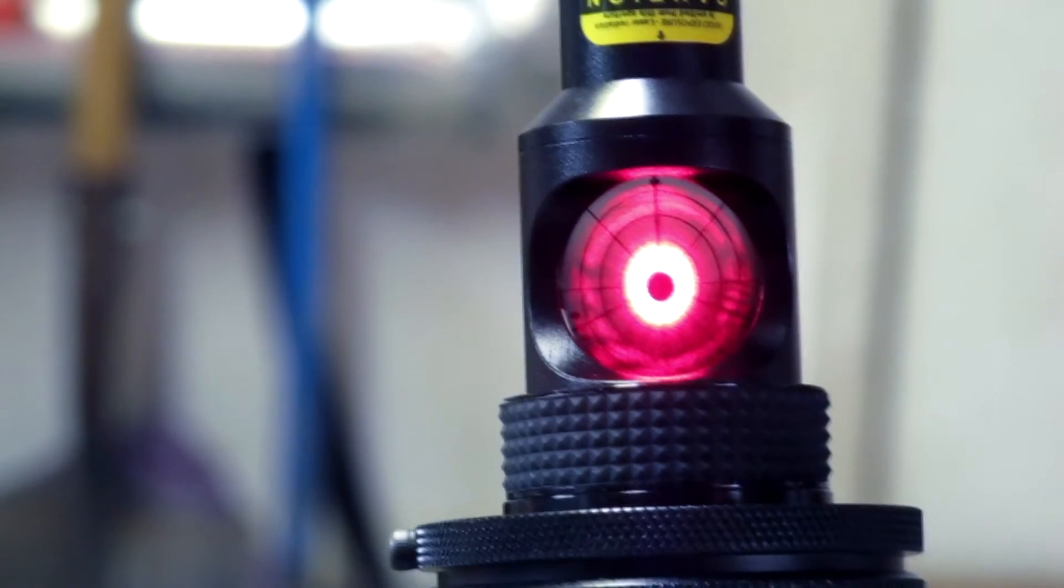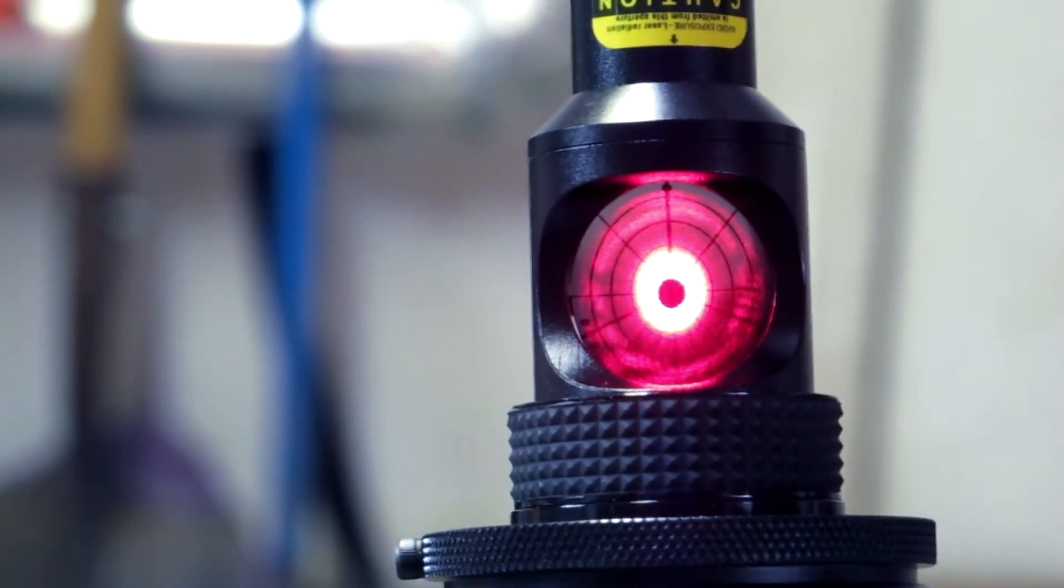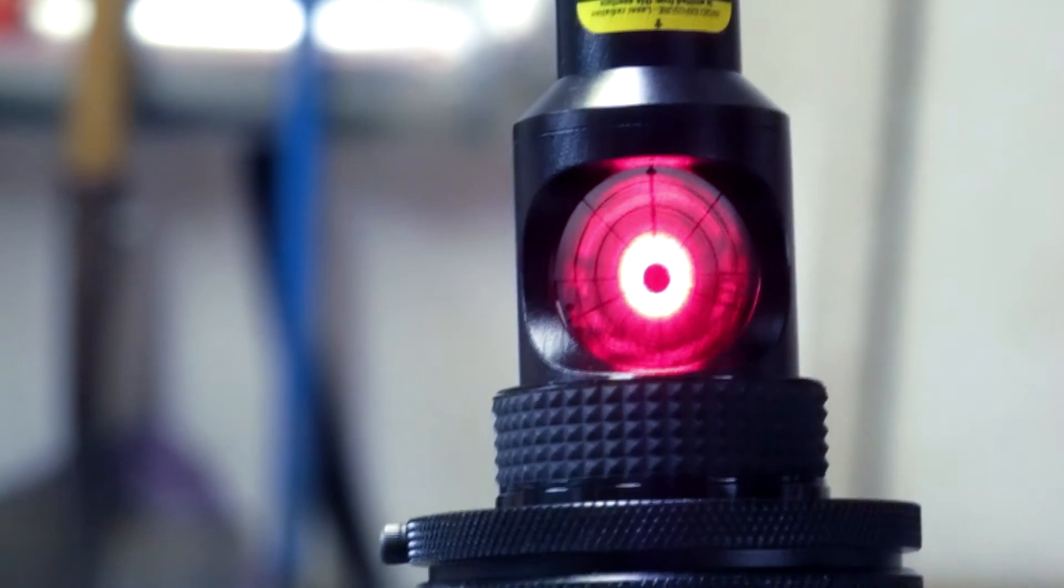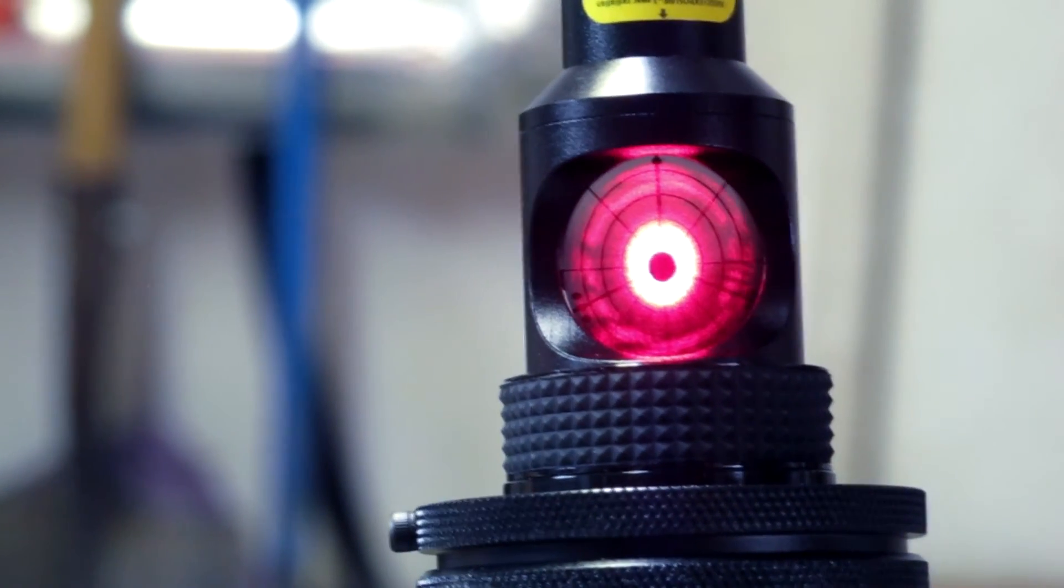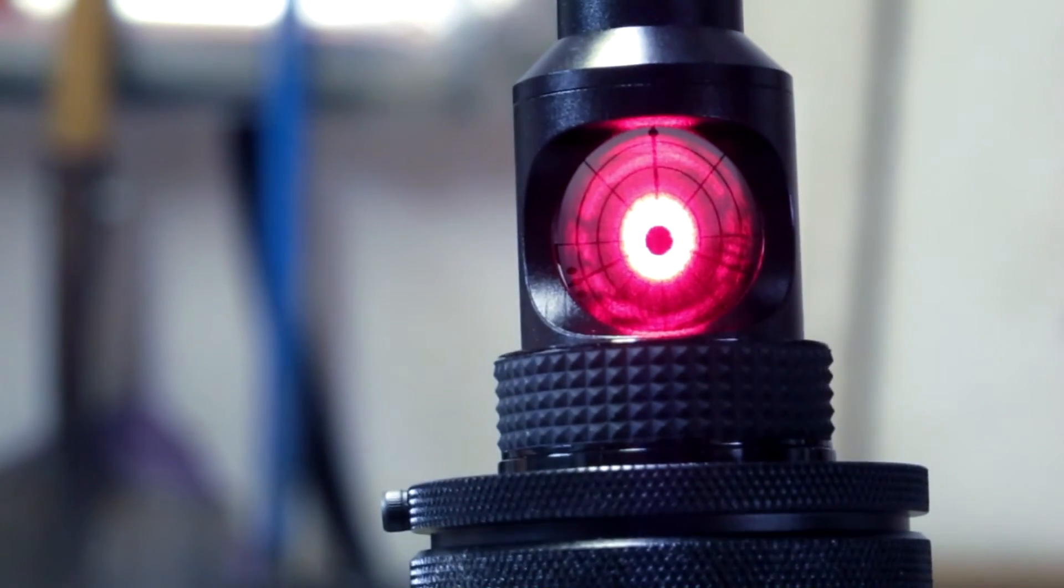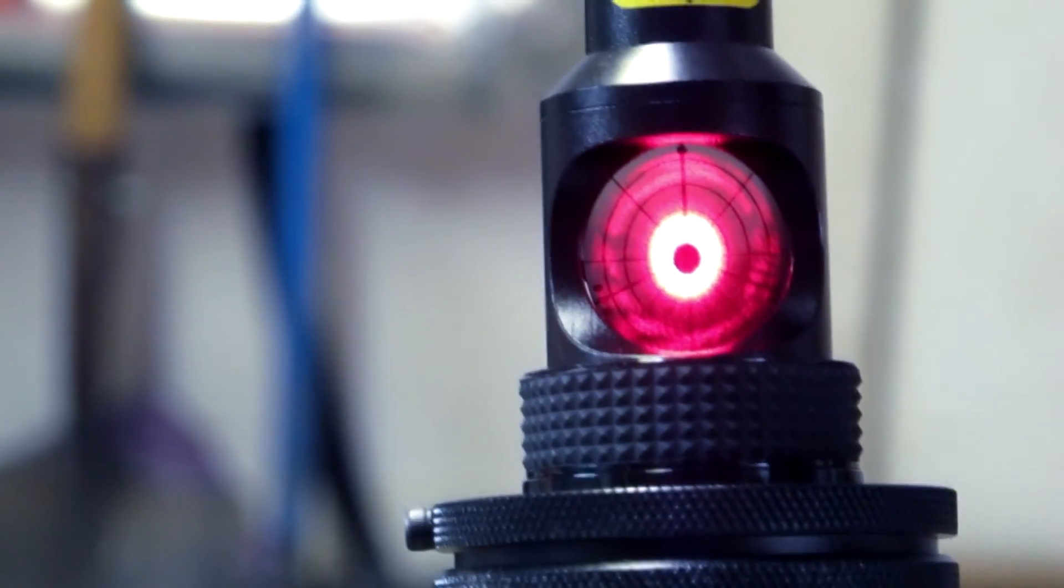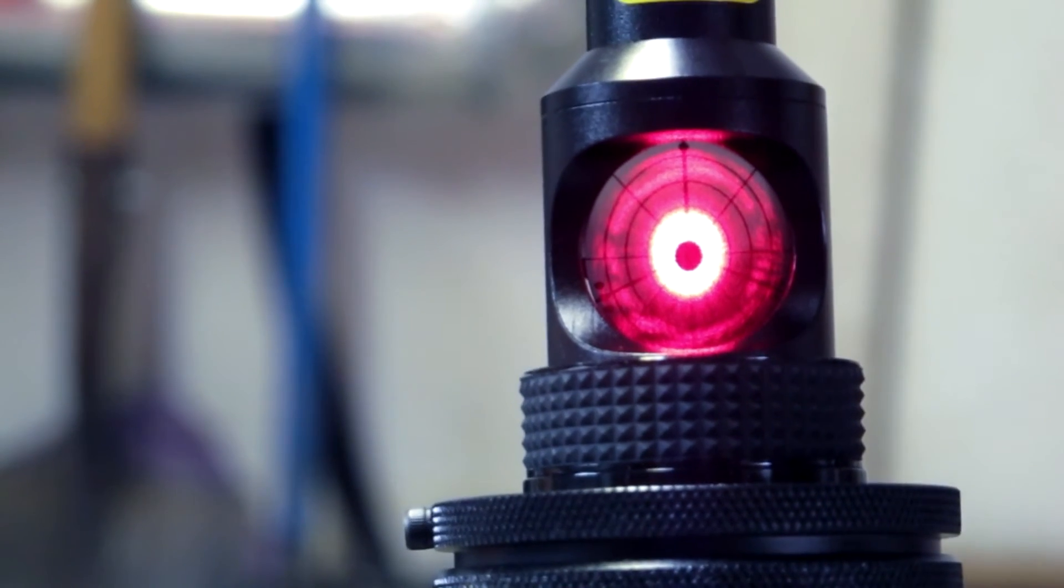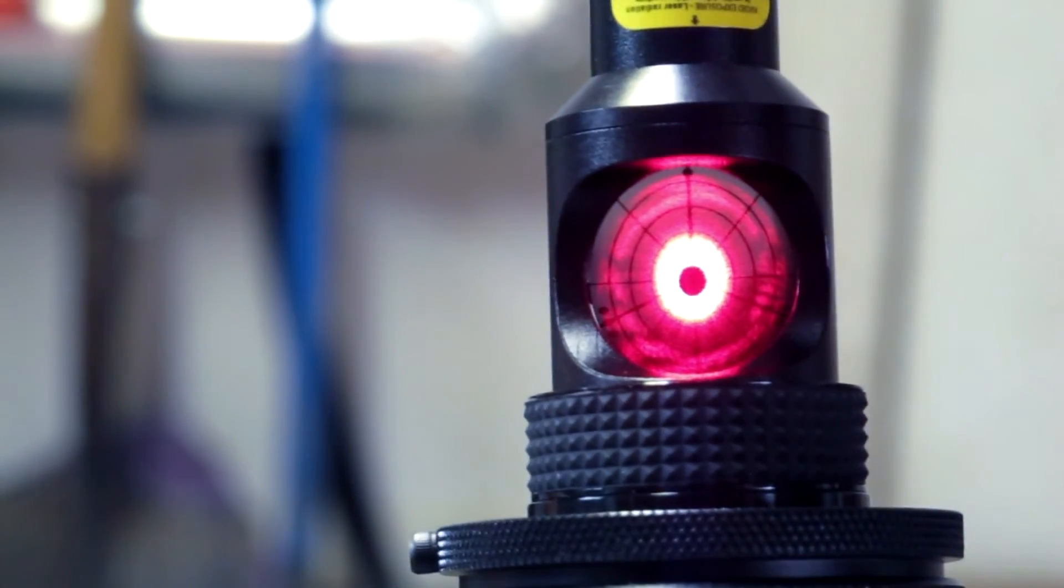There it is in the laser collimator. It's a nice kind of oblong circular donut that pretty much corresponds to the scale that's on the HOTEC collimator. And that's quite a bit different than what you would normally see if you were just going through the focuser.